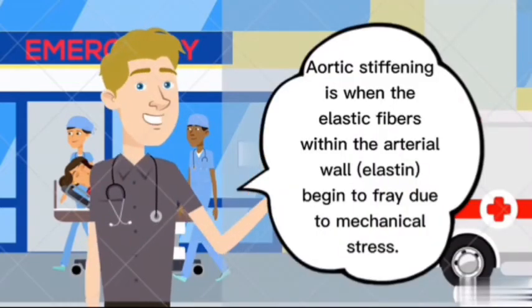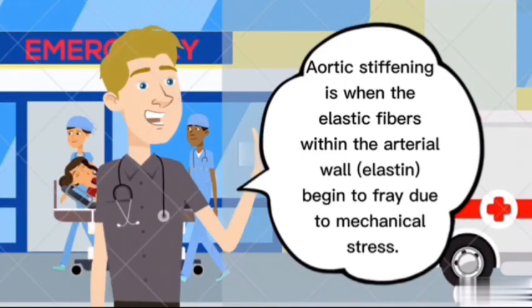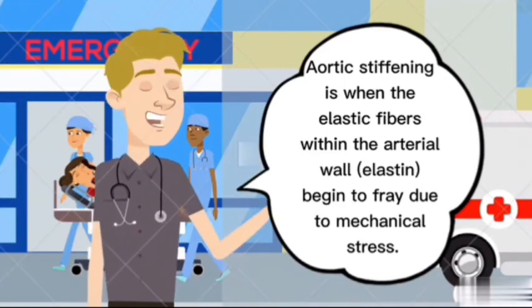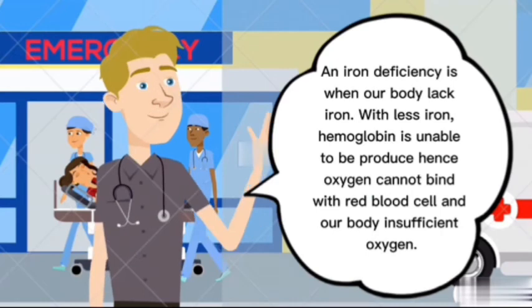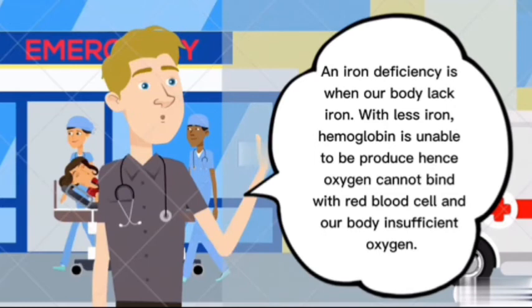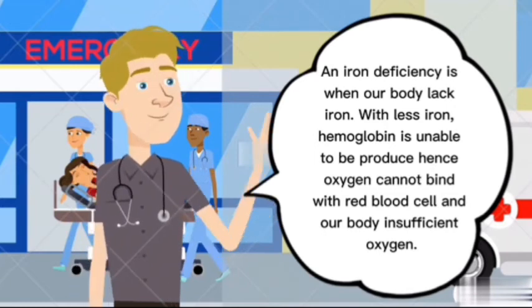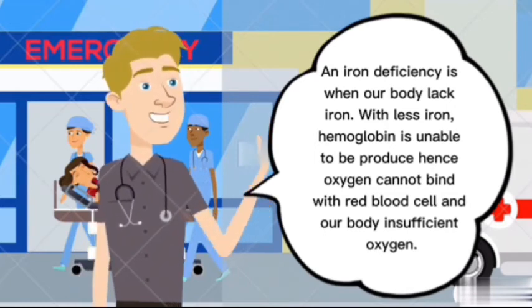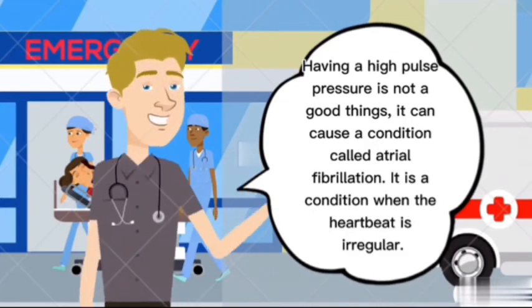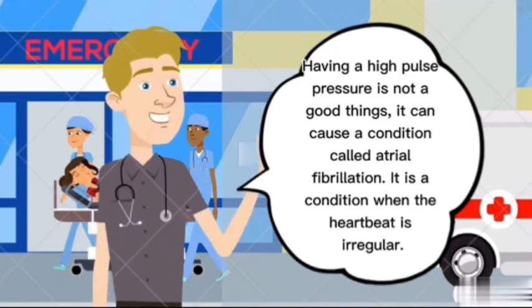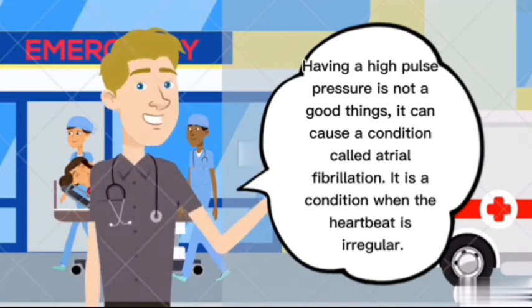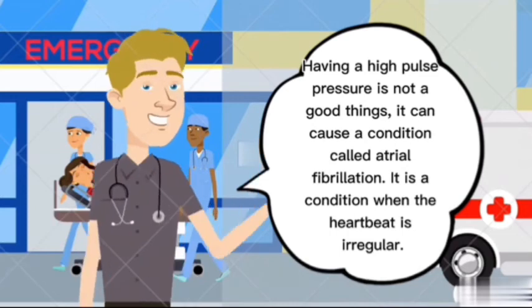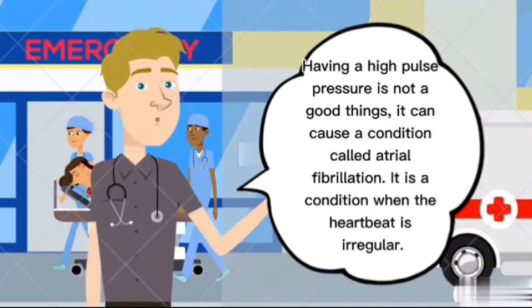Aortic stiffening is when the elastic fibers within the arterial wall begin to fray due to mechanical stress. Iron deficiency is when our body lacks iron; with less iron, hemoglobin cannot be produced, so oxygen cannot bind with red blood cells, leaving the body with insufficient oxygen. Having a high pulse pressure is not a good thing — it can cause atrial fibrillation, a condition when the heartbeat is irregular, which may raise the risk of blood clots, stroke, and heart attack.